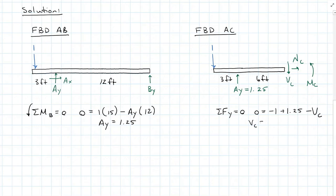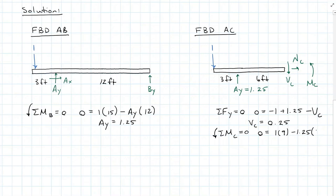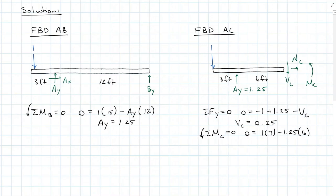We find that shear at C is equal to positive 0.25. Using that same free body diagram, I can sum moments about point C. I have 1 times 9 minus 1.25 times 6 plus the moment at C, and my moment at C is going to equal negative 1.5. So when the load is at the far left, my internal shear at C has one quarter the influence of the load, and the moment is experiencing 1.5 times the load. Let's move our load.